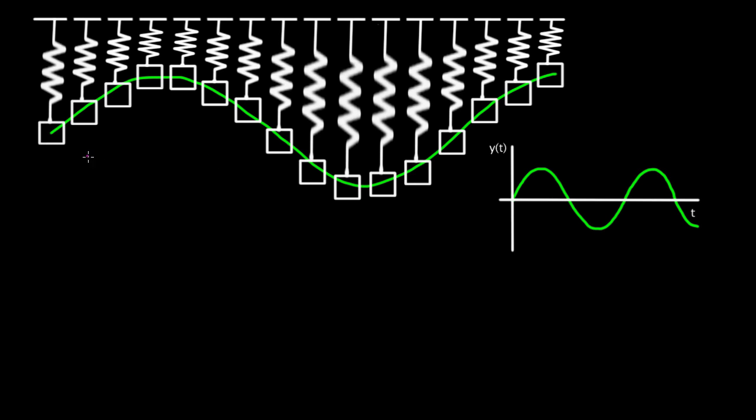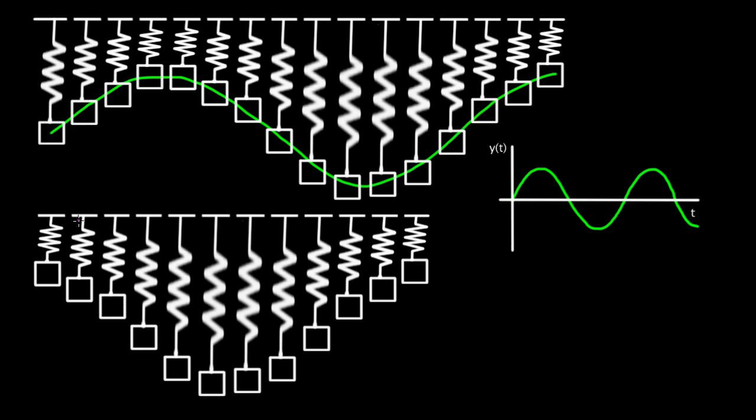But here's my question. Let's say we didn't start the mass in the middle and give it a kick upwards. Let's say at t equals zero, we start the mass all the way at the top and we let it drop. In other words, we do this. We start the mass up here, we let it drop.